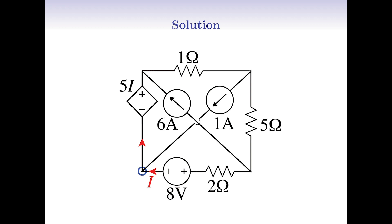Consider the bottom left node. The current I is incoming to the node; also there is another 1A incoming to the node by the 1A current source. So by KCL, the outgoing current from the node should be I plus 1A. Next, consider the top left node. There is I plus 1A incoming to the node as well as a 6A current from the current source. So there should be I plus 7A outgoing from the node.